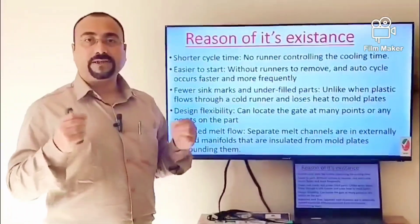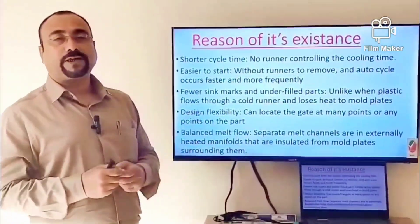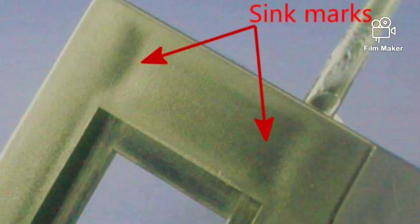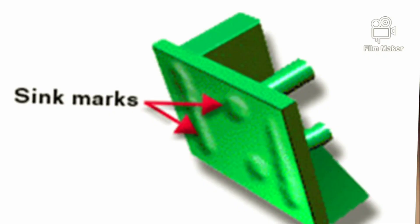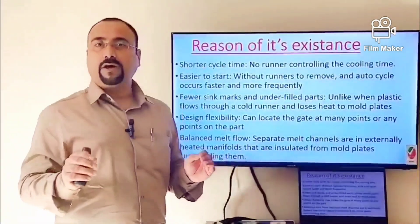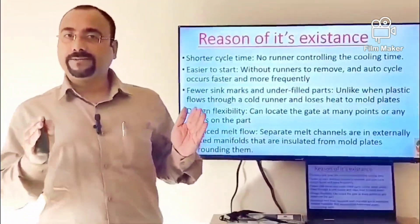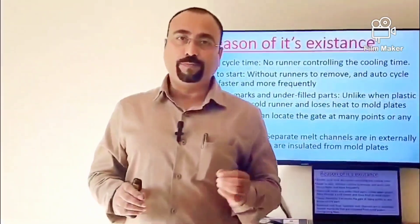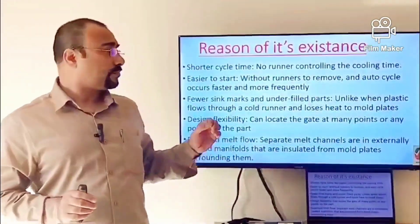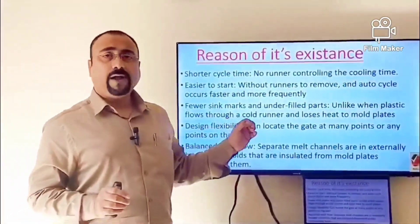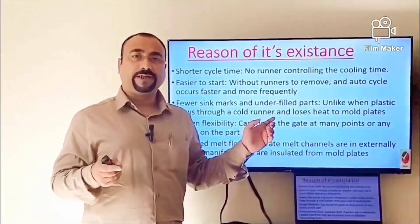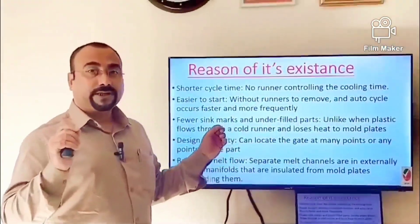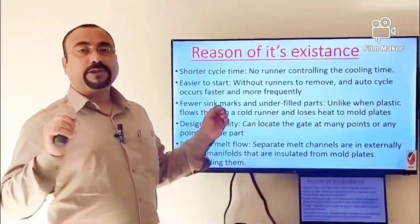The third benefit is fewer sink marks. Everyone has experienced sink marks in injection molded products. By introducing the hot runner system, since the mold back plate is always heated, there are fewer chances for sink marks. It has been witnessed in PET molded preforms and engineering plastics, but it can be resolved by keeping the temperature slightly higher.